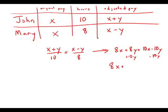And this gives me 8X plus 18Y equals 10X. I'm now going to subtract 8X from both sides to get all the X's in one place. So this is 18Y equals 2X or 9Y equals X.